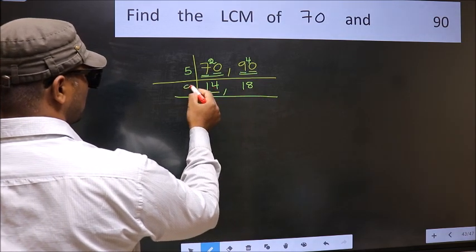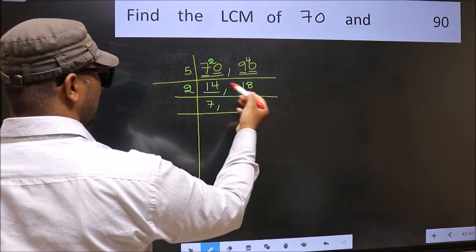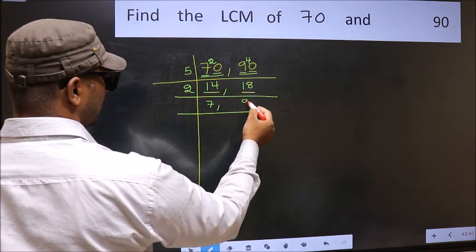Now here 14, 14 is 2 sevens. The other number 18. When do we get 18 in the 2 table? 2 nines, 18.